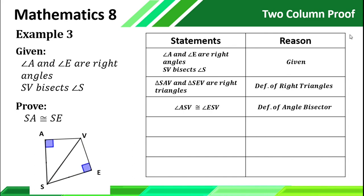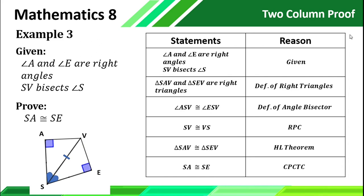Observing our figure, we can see that the hypotenuse of our triangle shares its side with the other triangle. So SB is congruent to BS by the reflexive property of congruence. We can conclude that triangle SAB and triangle SEB are congruent because of the HA theorem. Since we have proven the triangles congruent, SA and SE will be congruent using CPCTC — the corresponding parts of congruent triangles are always congruent.